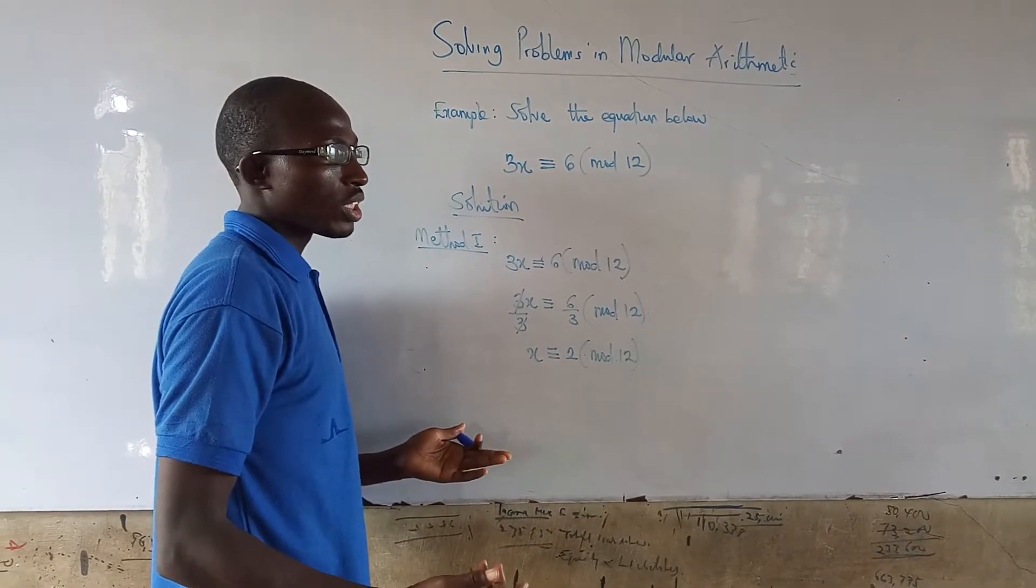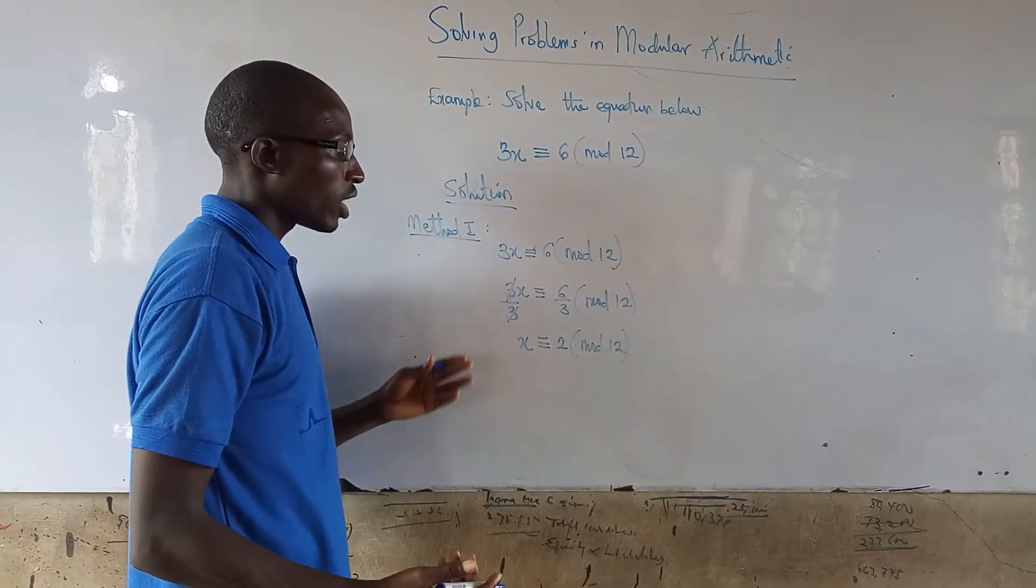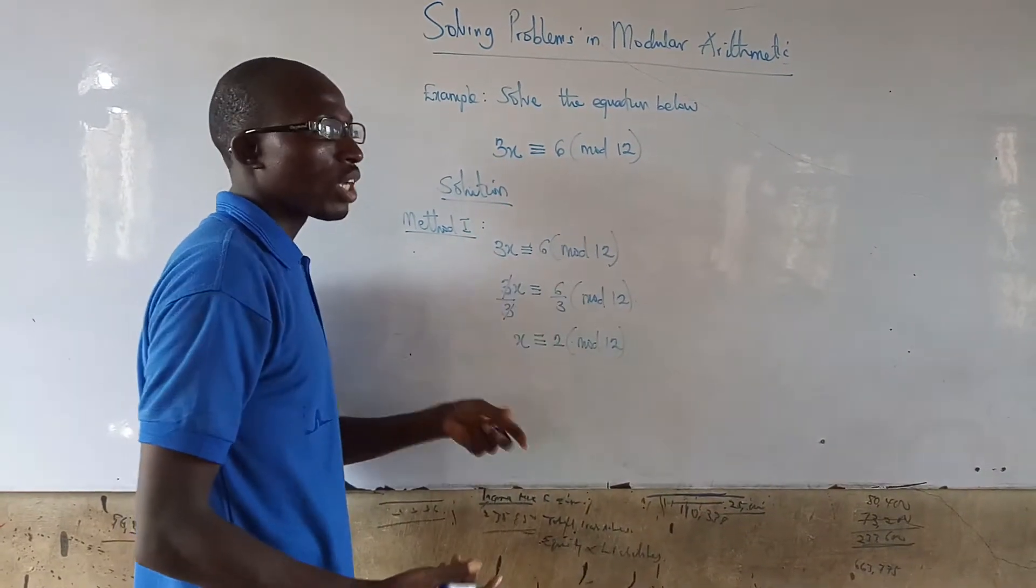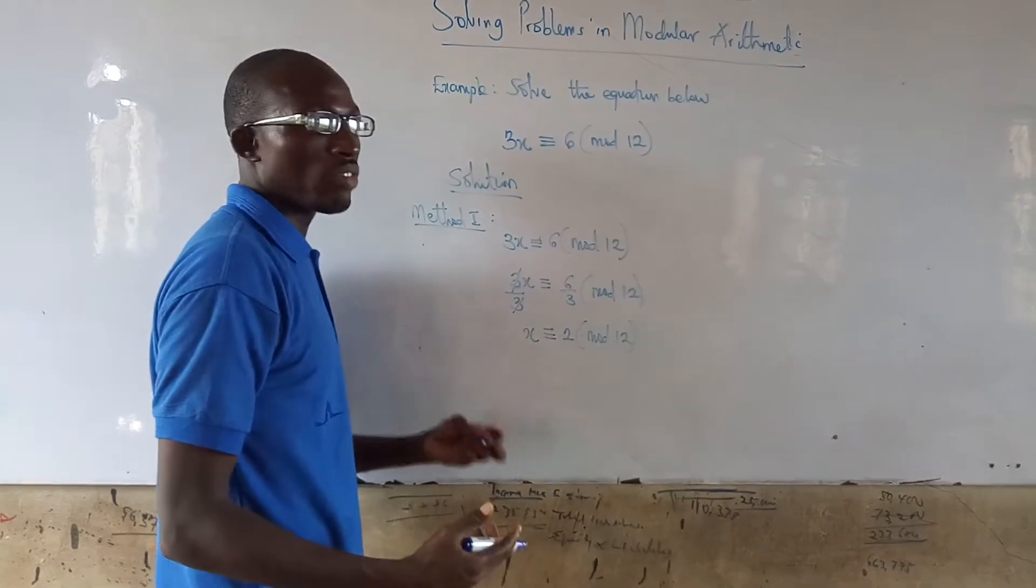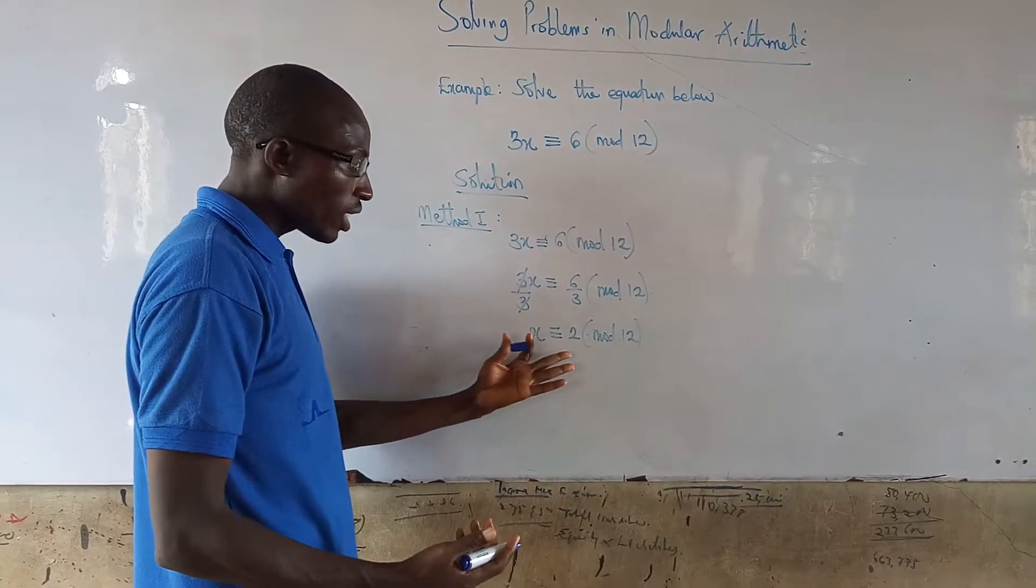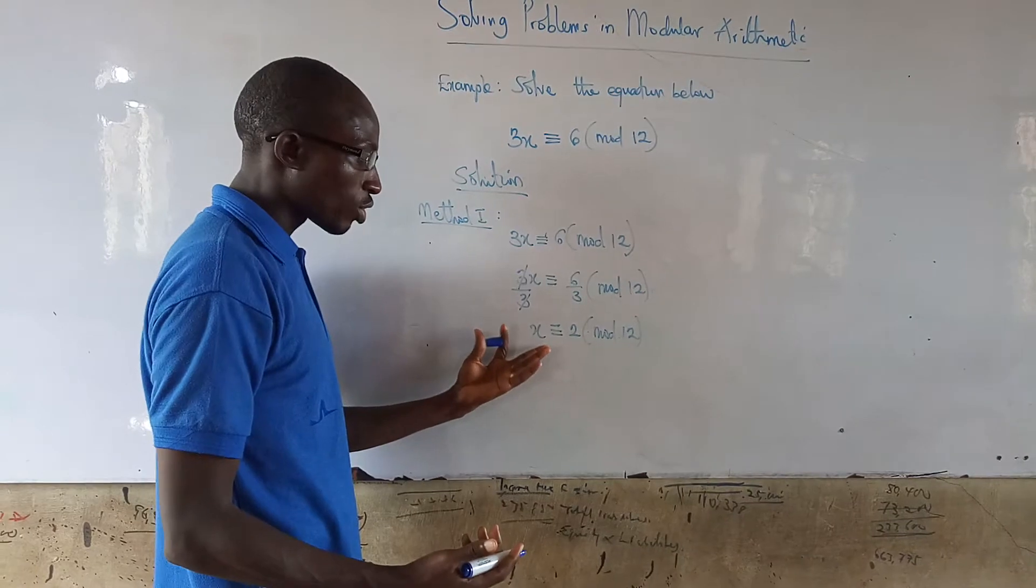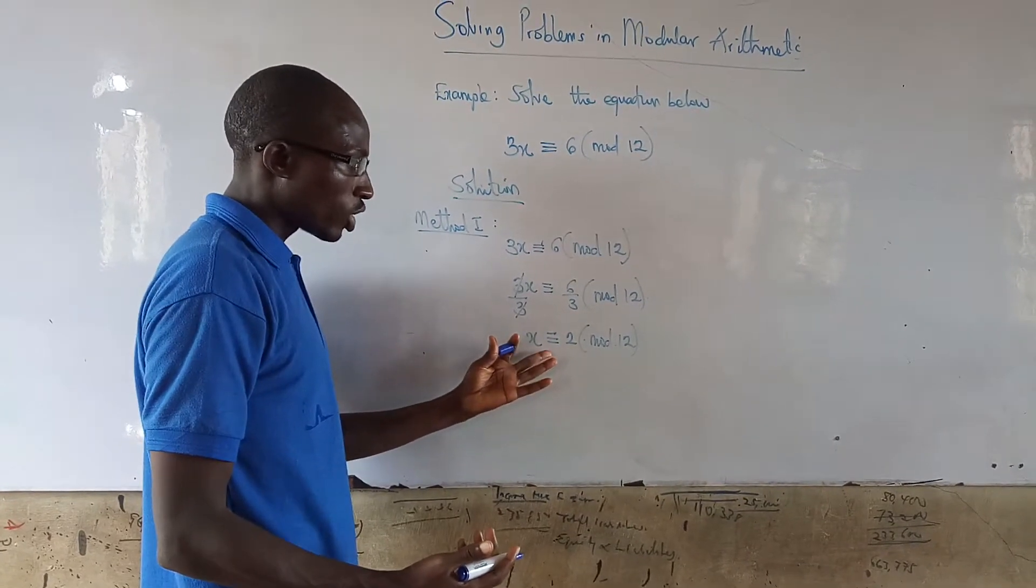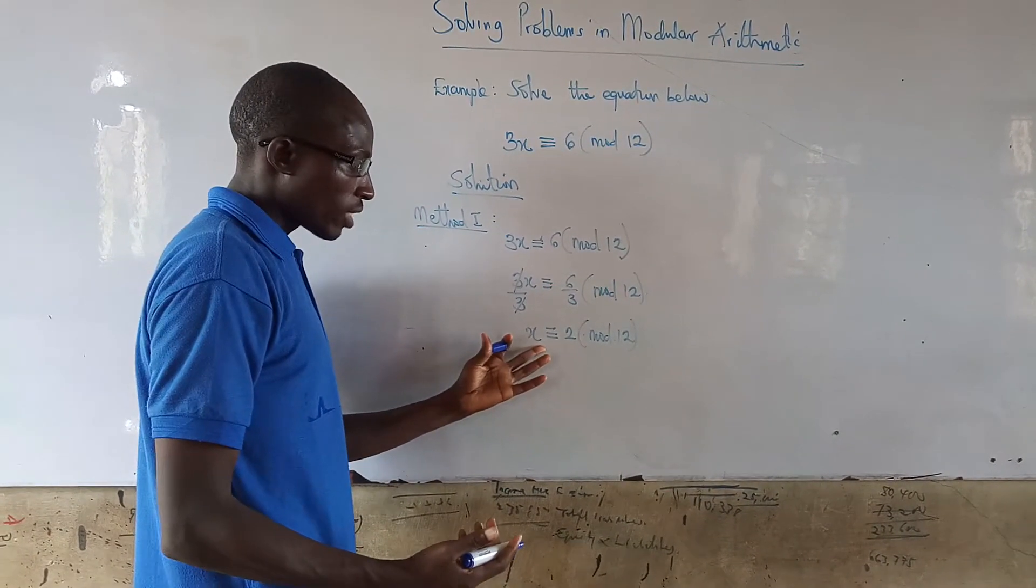So that is giving us the kind of impression that if 6 is divided by 12 and this is also divided by 12, we have the same results. It doesn't mean that it's going to be only x equals to 2.